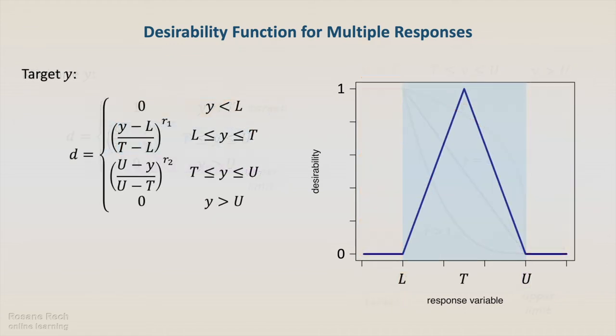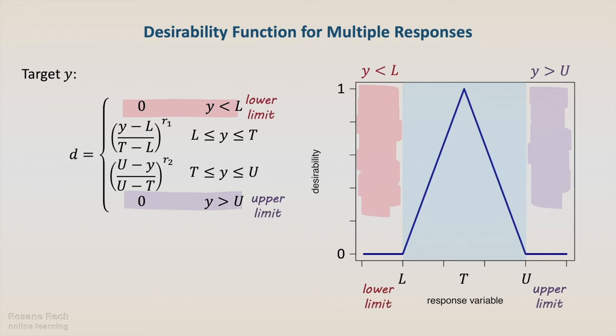The last function is for when the response y is to meet a defined target, other than minimizing or maximize. In this case, the desirability function returns 0 when y is lower or higher than defined thresholds, increases if y is between the lower limit and the target, and decreases if the response is between the target and the upper limit.